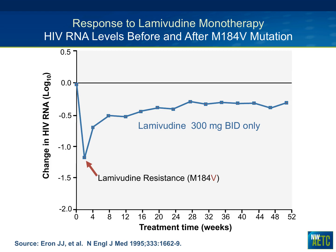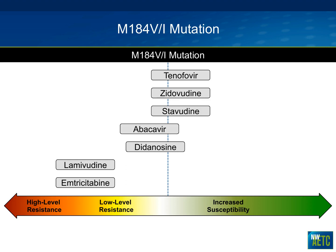Joe Aaron's study published in the New England Journal, about 20 years ago, included a lamivudine monotherapy arm at 300 mg twice daily. In the first week or two, individuals got a great drop in viral load, but rapidly developed an M184V mutation within a couple of weeks. The viral load started going back up, but importantly did not return to baseline — the person maintained approximately a 0.4 to 0.5 log reduction in the presence of M184V.